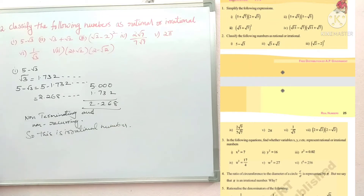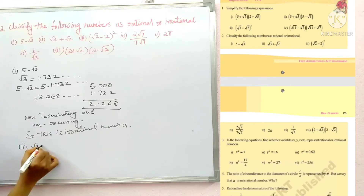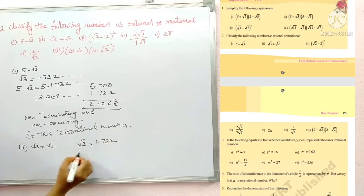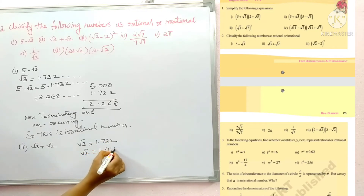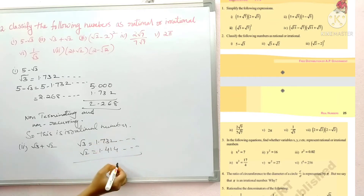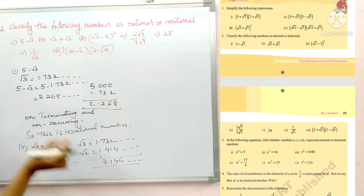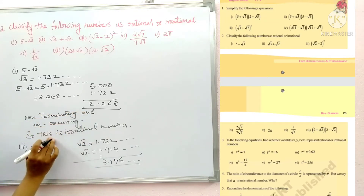In the same pattern, we solve root 3 plus root 2. The sum of two irrational numbers is irrational. Root 3 equals 1.732 and root 2 equals 1.414. After adding, you get 3.146 and so on — non-terminating and non-recurring — so this is an irrational number.